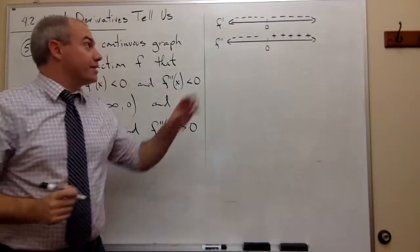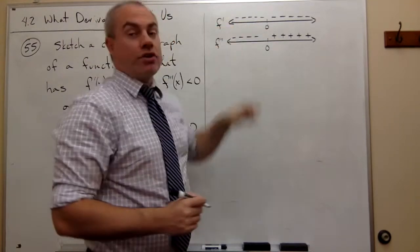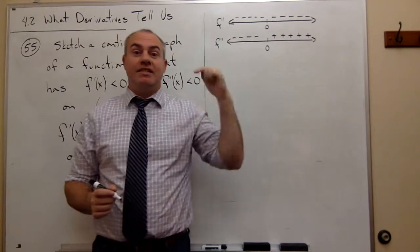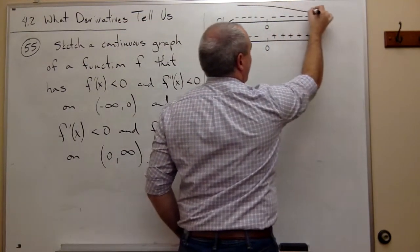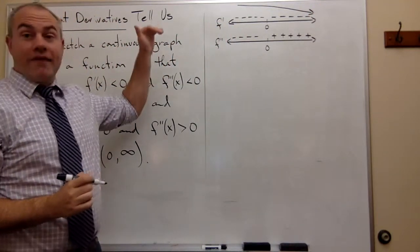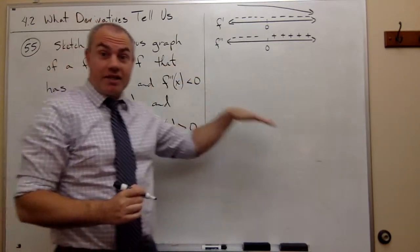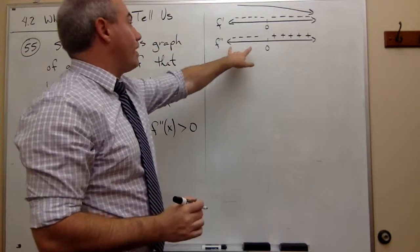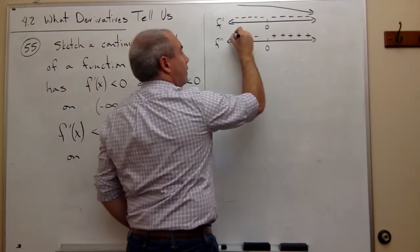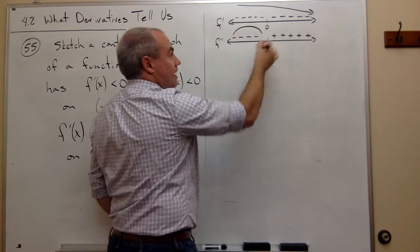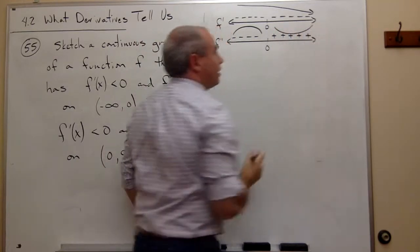Now I need to interpret these two number lines. When I see negatives on the first derivative, that tells me the function is decreasing — so this thing is just constantly going down. For the second derivative to be negative means it's concave down, so it's bending down. And for the second derivative to be positive, it means it's concave up.